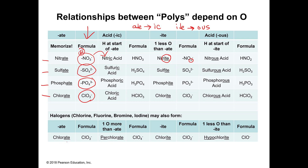Chlorate, ClO₃, is a little bit different. One more oxygen would be perchlorate because it's higher than the ATE. One less oxygen than the ATE is chlorite, and one less than the ITE is hypochlorite. Don't expect to get this right away — you're going to have to use these and digest them a little bit. You can go back and re-listen and practice things.